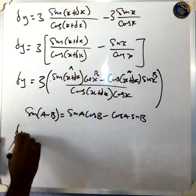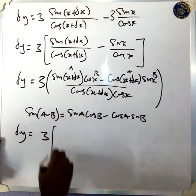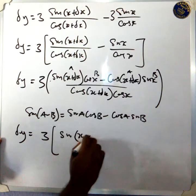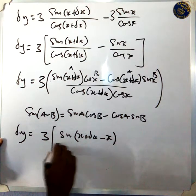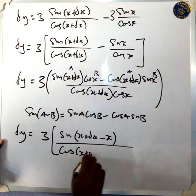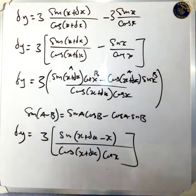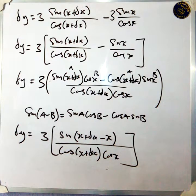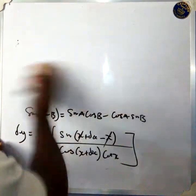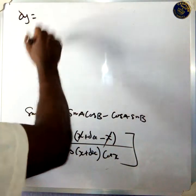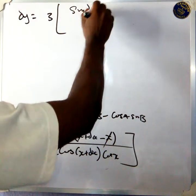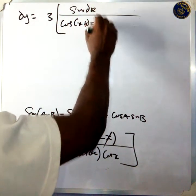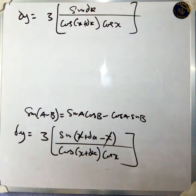So you have delta y equal delta x into sine of (x plus delta x minus x), all over cos(x plus delta x) times cos x. You can see that plus x and minus x cancel, leaving just delta x. So you have delta y equal delta x into sine(delta x), all over cos(x plus delta x) times cos x.